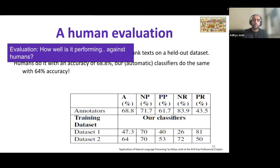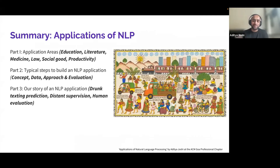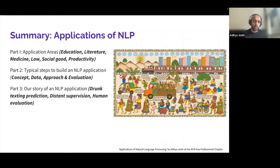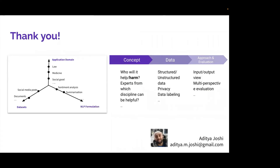In today's talk I covered applications of NLP. In the first part, we looked at NLP in education technology, literature, medicine, law, and social good. In the second part, we looked at typical steps to build an NLP application: concept, data, approach, and evaluation. Finally, I demonstrated how these steps are put into action by telling the story of the drunk texting prediction paper. That's it from me. Thank you, and I'm happy to answer questions.